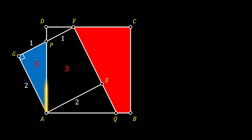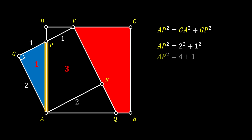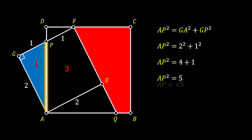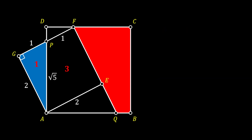Now let's take a look at the line AP. This line is the hypotenuse of our blue triangle APG, so we can use the Pythagorean theorem and say that AP squared is equal to GA squared plus GP squared. We can substitute the values from the sketch and simplify to finally get that AP squared is equal to five, which means that the length of the side AP is equal to the square root of five.